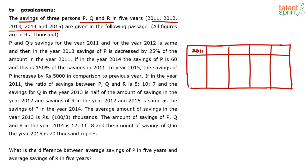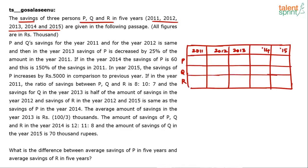Let's make the table first with columns for years 2011, 2012, 2013, 2014, and 2015, and rows for persons P, Q, and R. We'll read the passage and fill in the gaps — some information will be available directly, others in relation to other values.